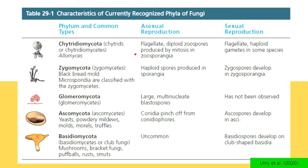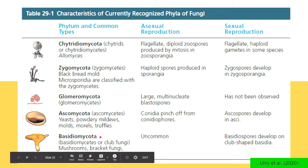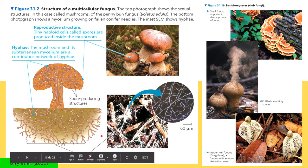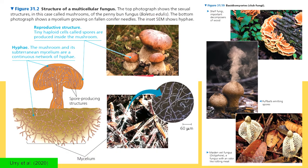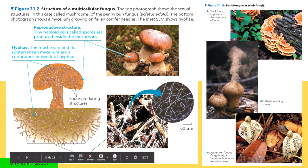These are examples of representative phyla of fungi: chytridiomycota, zygomycota — these are your black bread molds, glomeromycota, ascomycota — your yeasts, truffles and molds — and basidiomycota — these are your mushrooms and club fungi. Representative organisms include penny bun fungus Boletus edulis, shelf fungi attached on wood because they decompose the wood, puffballs emitting spores since they mostly reproduce through sporulation, and the maiden veiled fungus Dictyophora — a fungus with an odor like rotting meat.